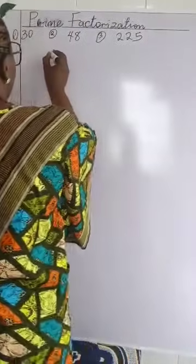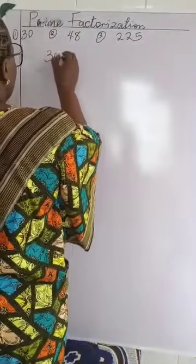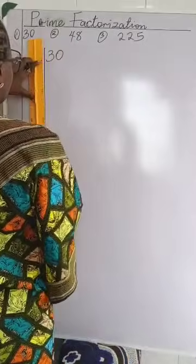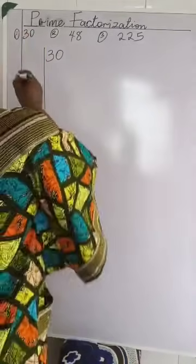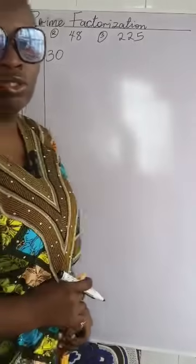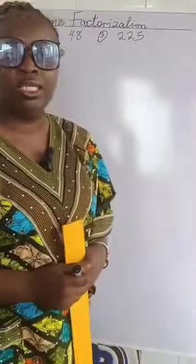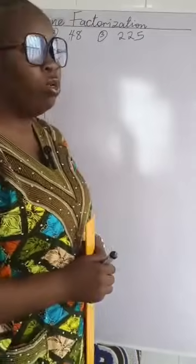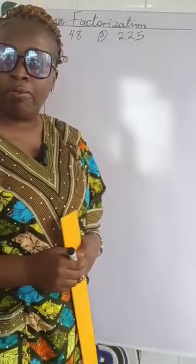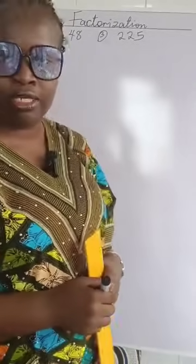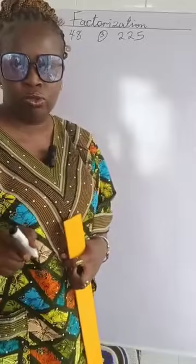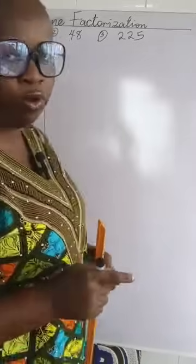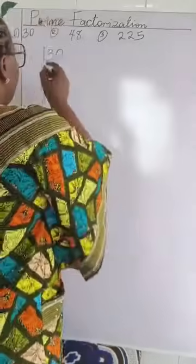Now we'll have 30 here. We're going to run a line — this is our number one. For us to do it, we are going to be using the smallest prime number, and we want to use 2. Why do we want to use 2? Remember that 2 divides numbers that end in 0, 2, 4, 6, and 8. So since we have 30, the smallest prime we'll be using is 2.